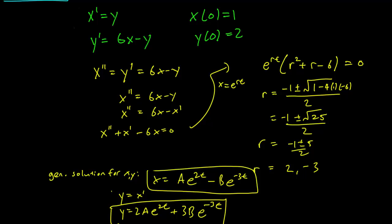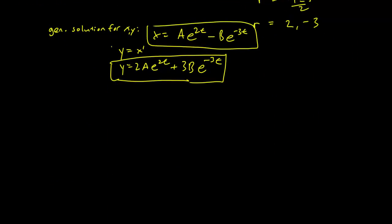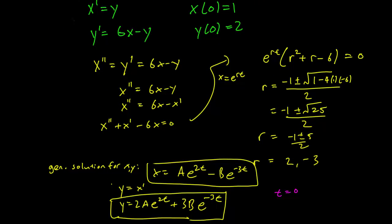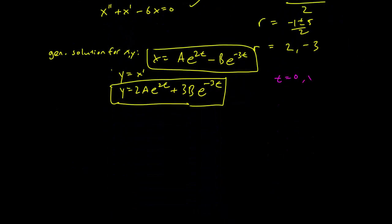So x of 0 equals 1, y of 0 equals 2 means that our initial conditions are simply, let's write that in a different color, t equals 0. So x of 0, x equals 0, x is 1, y is 2. Those are our initial conditions, so let's plug those in.